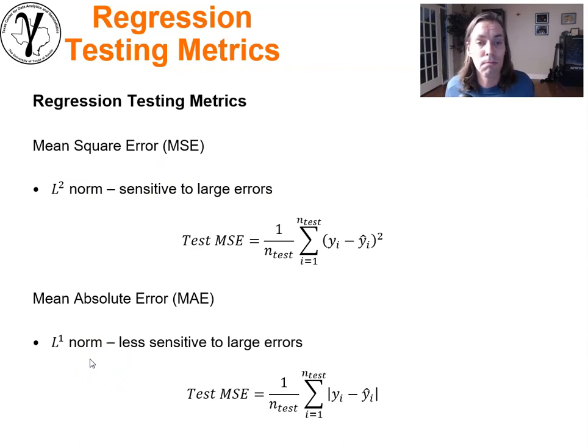Mean absolute error is the L1 norm equivalent. It'll be less sensitive to large errors. You might deem that's better to use because you're not as interested in those big errors. You want more of an aggregate over all of the errors over all of the testing data, and so the equation for calculating the L1 norm over testing data is shown right here, the test mean absolute error.